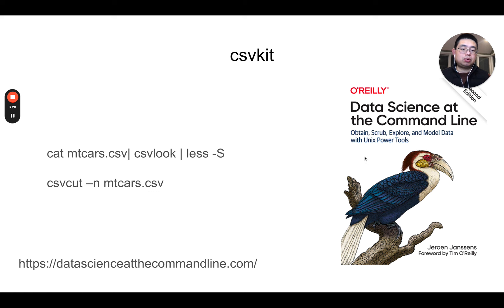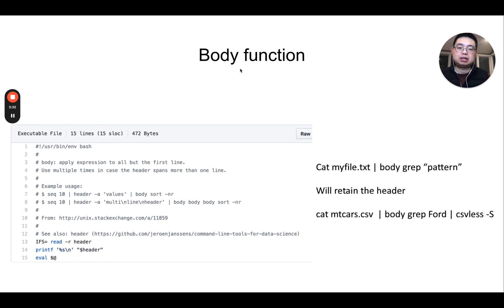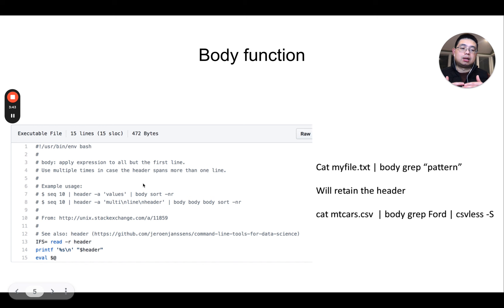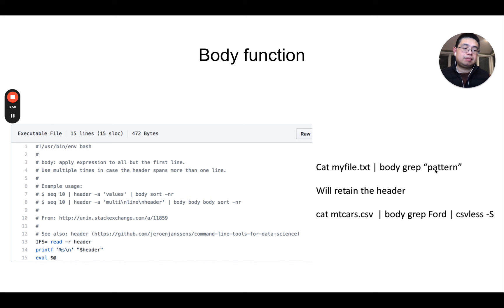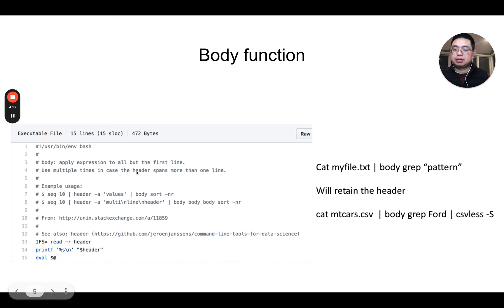In this book there's a function introduced called the body function. This body function is just a shell script that applies commands to the rows after the header. For example, if you have a file with a header and want to grep for a pattern while keeping the header, you can use body with grep for whatever pattern that is. You can copy this shell script and put it into your user bin folder.